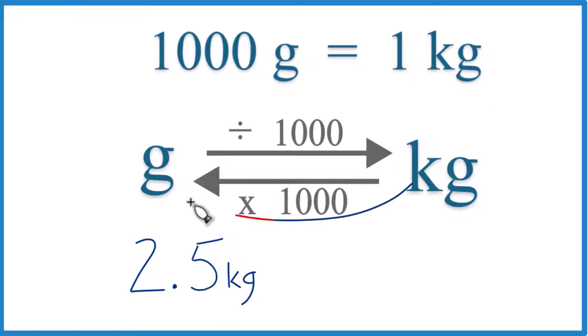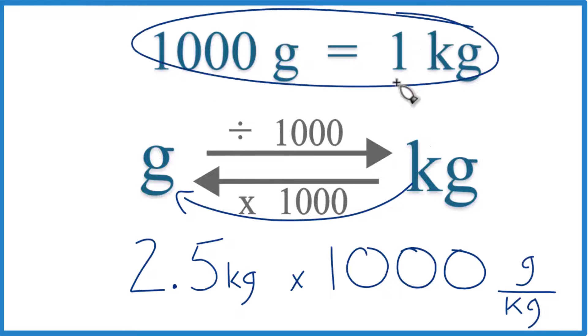So kilograms to grams, we multiply by 1,000, like this. And note the units are grams per kilogram. We have 1,000 grams in 1 kilogram, just like we have in our conversion factor.